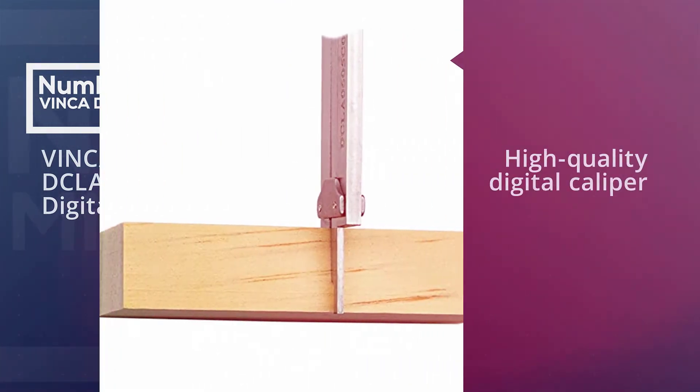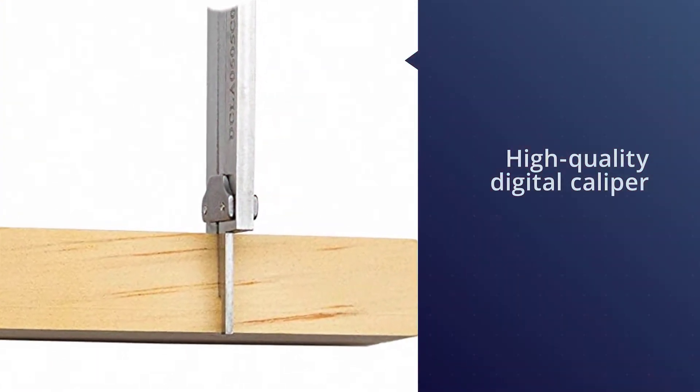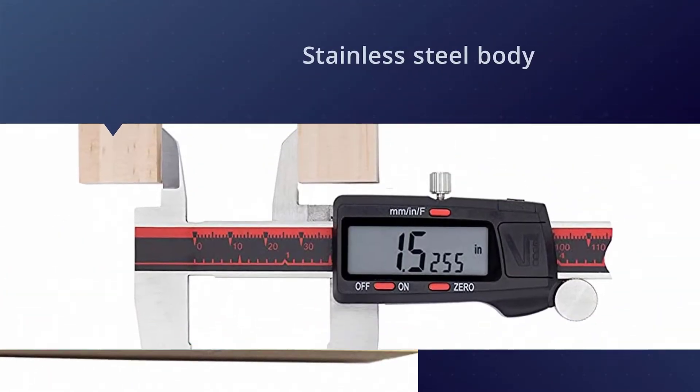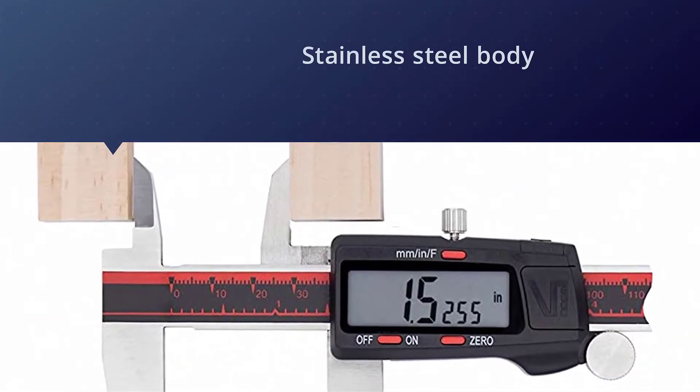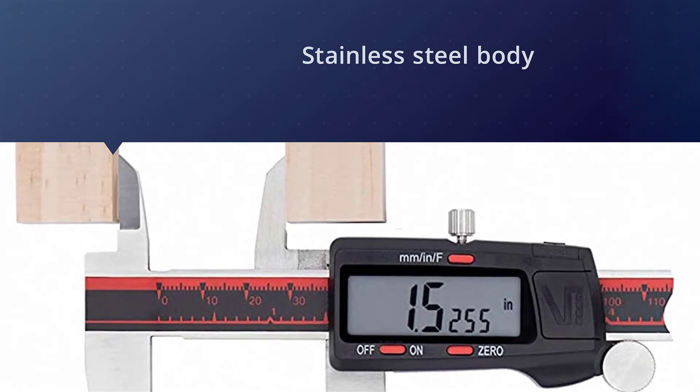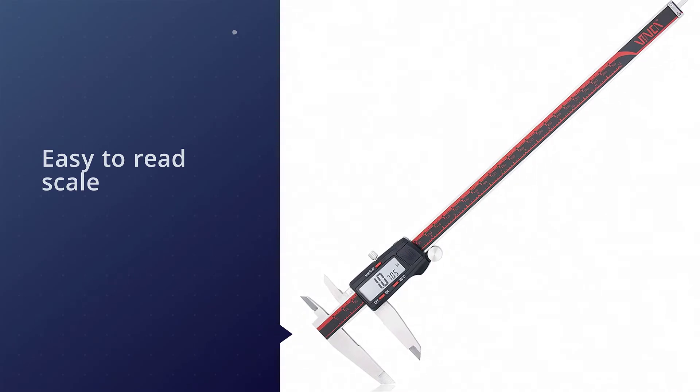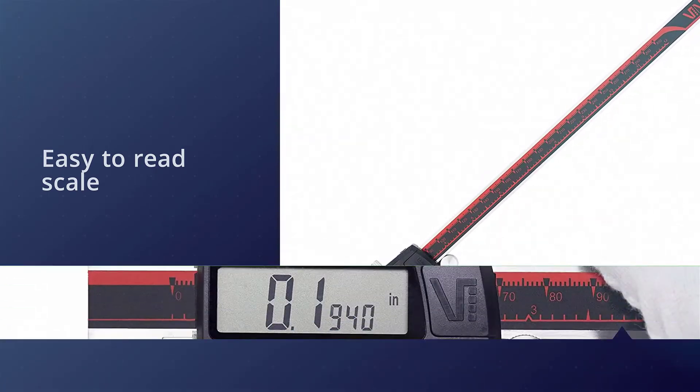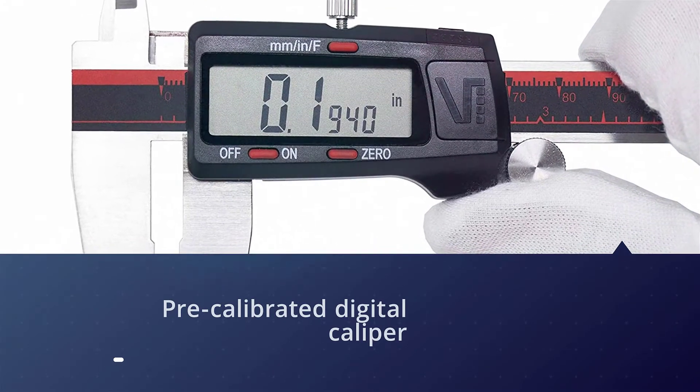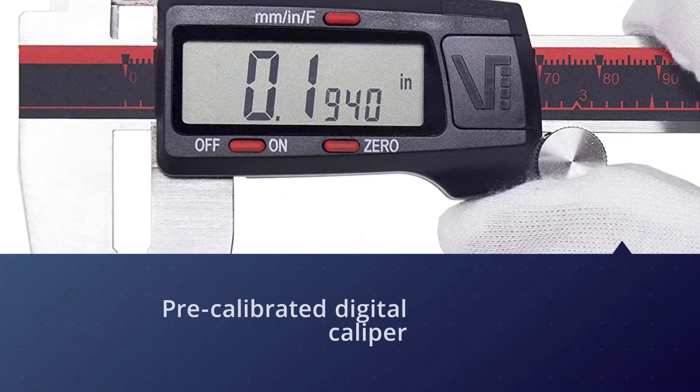Number two: Vinca DCLA-1205 digital caliper. In the second position, we have a high-quality stainless steel digital caliper from Vinca. It has a great-looking finish along with clearly visible digits on the scale. Talking about the range, it can provide resolution for up to 300 millimeters long objects with an accuracy of 0.04mm. You will not have to calibrate the digital caliper as it is already calibrated out of the box. It also features an RS-232 data transfer port that can be used to store the results directly into your computer while operating.